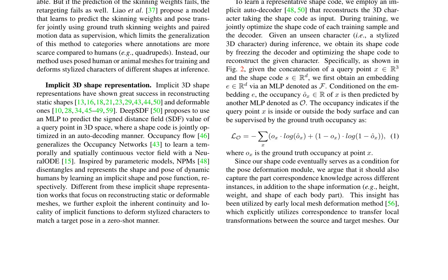The authors survey existing works on mesh deformation transfer, skeleton-based pose transfer, and implicit 3D shape representation. They highlight the limitations of these methods, such as relying on human effort to annotate the correspondence, requiring a skeleton for pose transfer, or failing to generalize to categories where annotations are scarce.